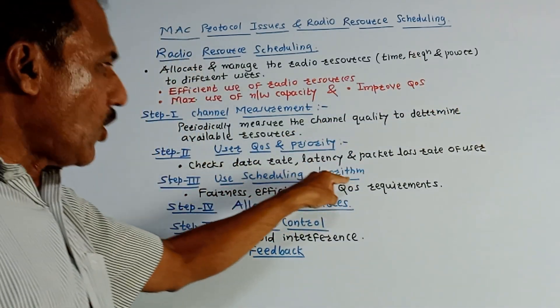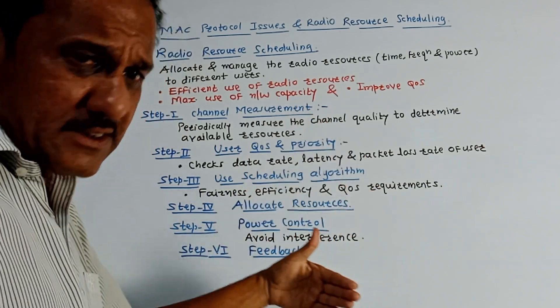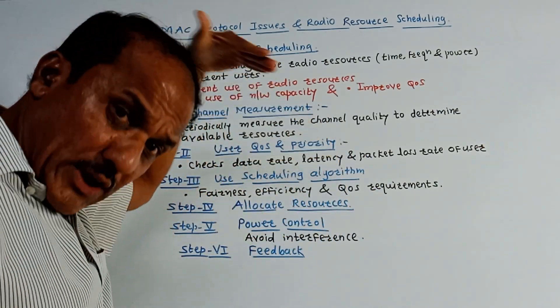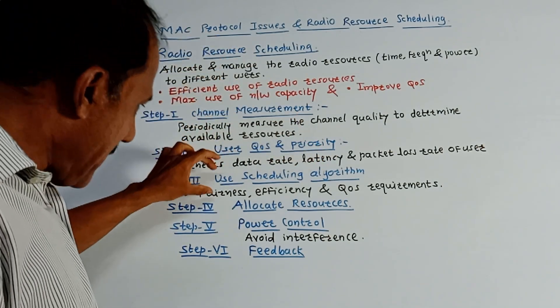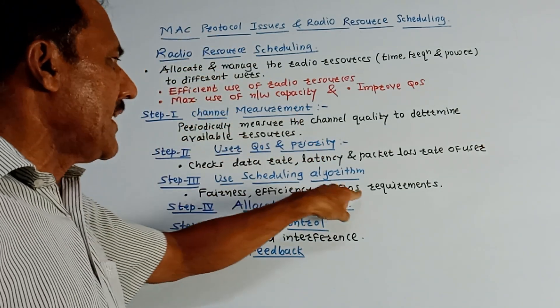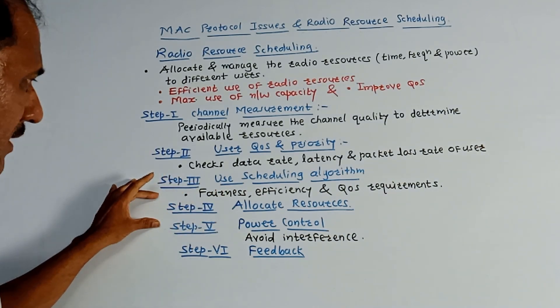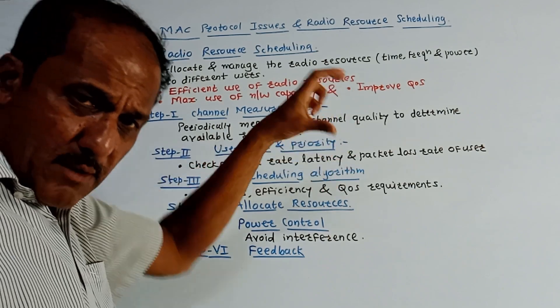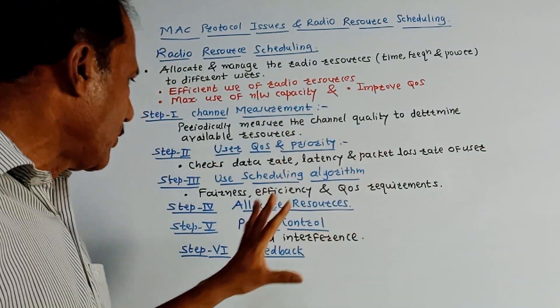Step 3: use scheduling algorithms. As I said, we have already discussed this scheduling algorithm, so make use of suitable scheduling algorithm that may be based on fairness, efficiency, and quality of service requirements. Step 4: allocate resources. So based on the earlier steps, allocate a particular resource to the particular user.